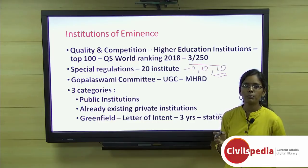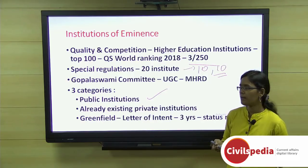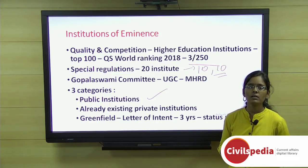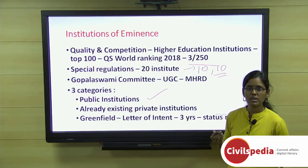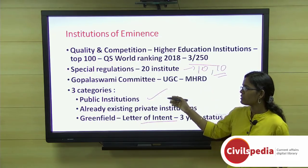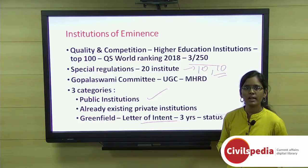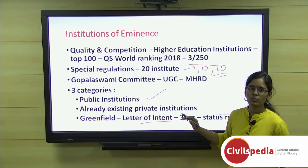Once UGC approves the institutes, the recommendation goes to MHRD, which grants the final Institute of Eminence status. Three categories exist: public institutions, already existing private institutions, and greenfield institutions. Greenfield institutions, which are not yet built, are given a three-year period to establish a global-standard institute. The six declared institutes include IIT Delhi, IIT Mumbai, IISc Bangalore, BITS Pilani, Manipal University, and the Jio-Reliance Institute under the greenfield category.